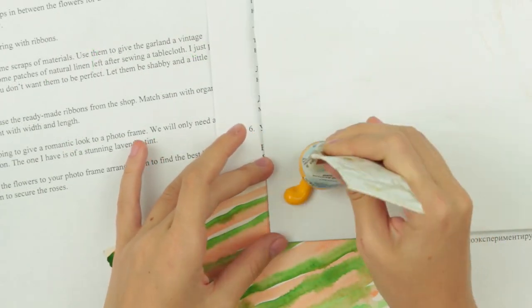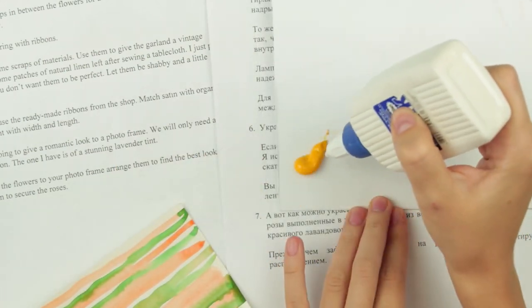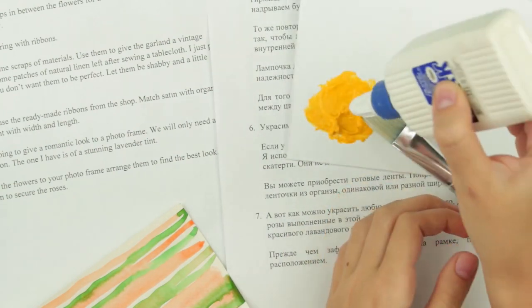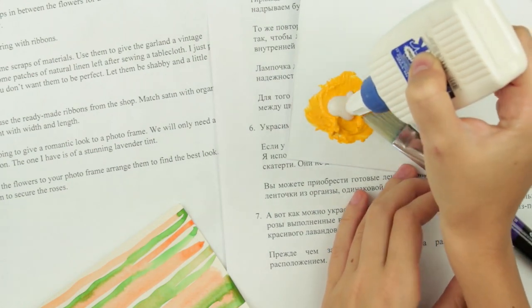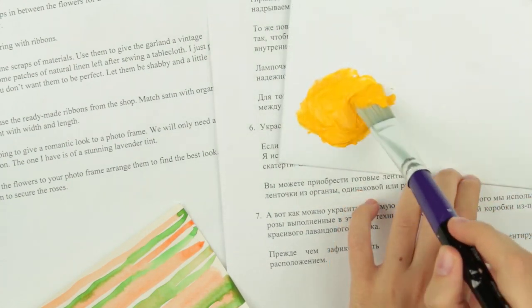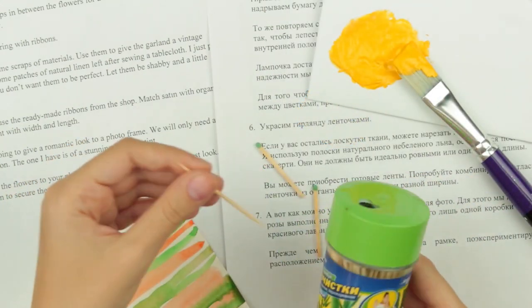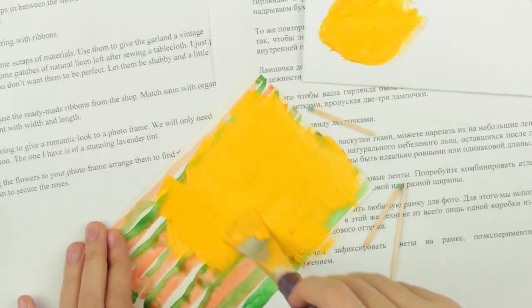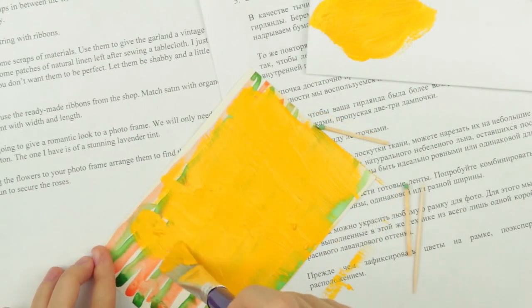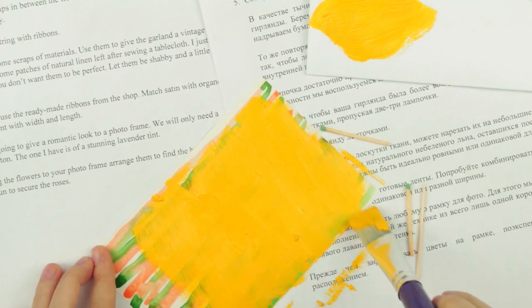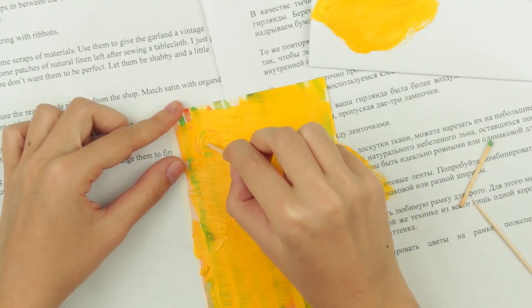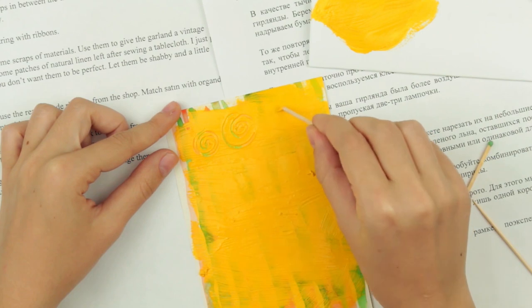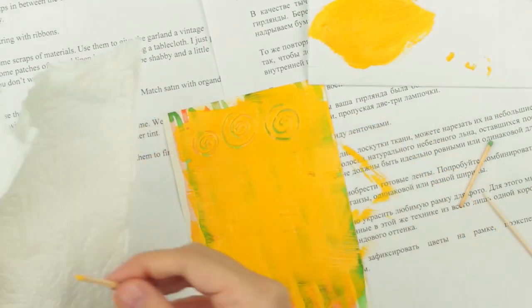The background is dry. Squeeze some oil paint onto the palette and add white glue, about a third. Mix with the brush to get a milkshake consistency. If the mixture is still too thick, add some more glue. You'll need thin sticks. Use matches or toothpicks. Now cover the background with the oil and glue mixture. Take a match and scratch a pattern on the wet surface. You just remove some paint to see the background. Clear the match from time to time.